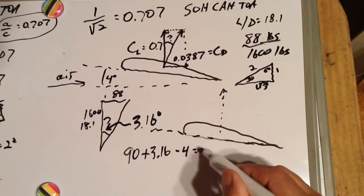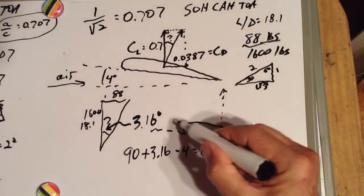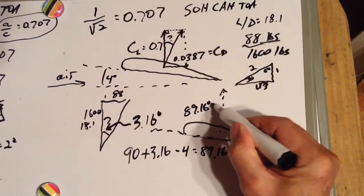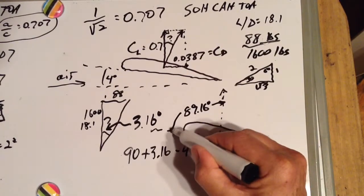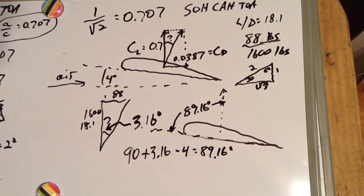89.16 degrees here, from our chord to our resultant vector at this particular angle of attack. It changes with other angles of attack.